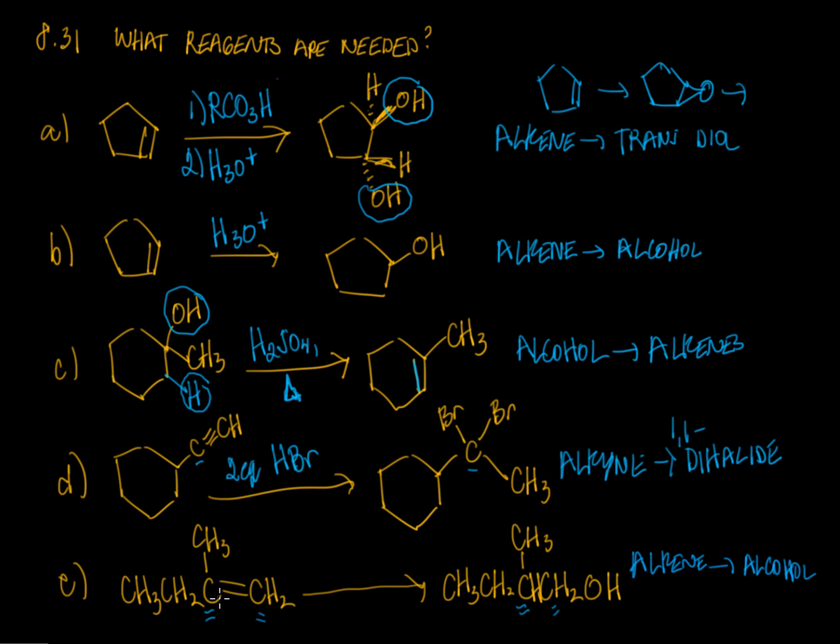But the more substituted carbon does not get the OH. So this is an anti-Markovnikov addition. And what we want to use is a two-step sequence here. We want to use borane followed by hydrogen peroxide. And that will give us the less substituted alcohol.